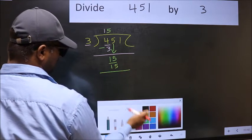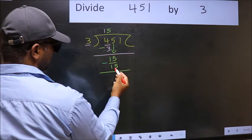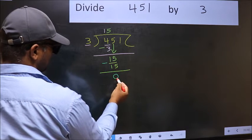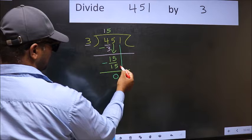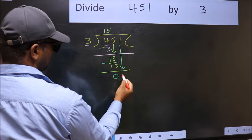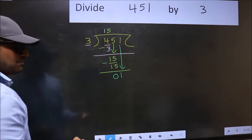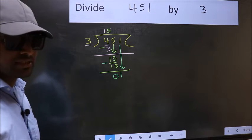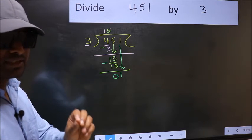Now you should subtract: 15 minus 15 = 0. After this, bring down the beside number. So, 1 comes down. After this step, the mistake happens.